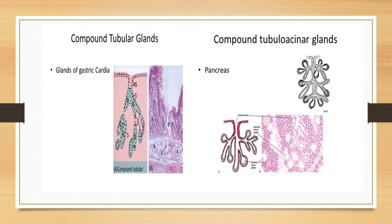The gastric glands of the stomach are called compound tubular glands. The pancreas is an example of compound tubulo-acinar glands, in which the parenchyma or secretory portion of the gland is both tube-like and acinar-like. There are various examples of these glands, and you should be able to quote at least one or two examples per classification in your short essay questions.